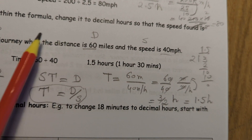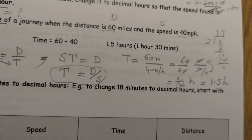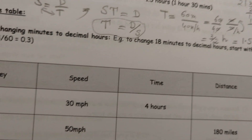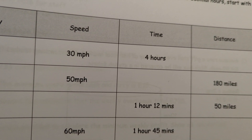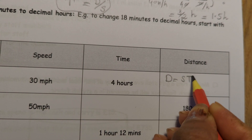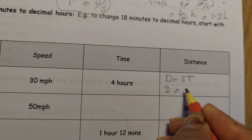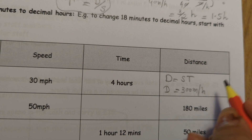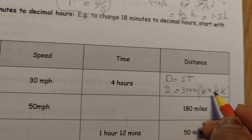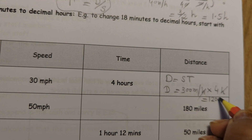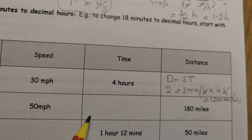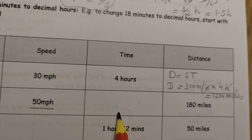The answer is 1.5 hours. If they ask you to convert it into minutes you can do so, otherwise leave it as 1.5 hours. The next question gives a table where speed and time are given and we need to find distance. The formula for distance is speed multiplied by time. Speed is 300 miles per hour, so distance equals 300 times the time in hours — hours cancel — giving 1200 miles.